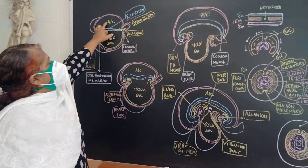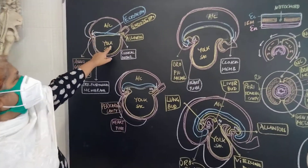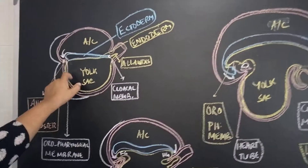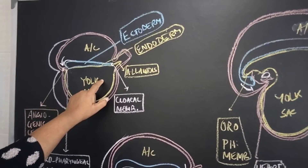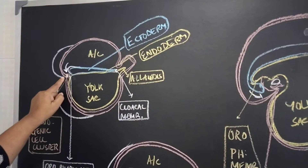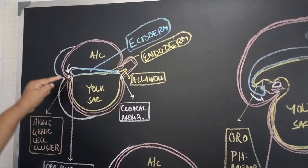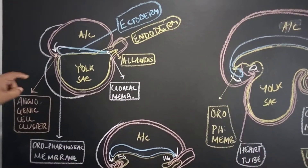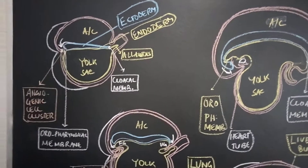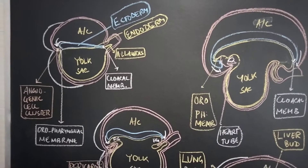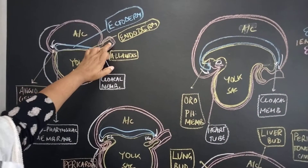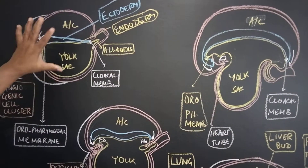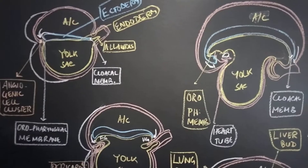First is this slide. This is the amniotic cavity, this is the yolk sac, this is ectoderm, this is endoderm, which is forming the yolk sac cavity, and this is the allantois. This position is where the angiogenic cell clusters will be, forming the heart tube in future. This is your connecting stalk. This position is before your head folding.